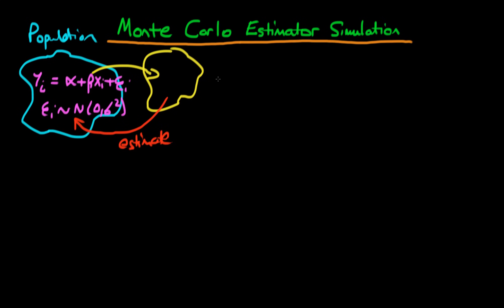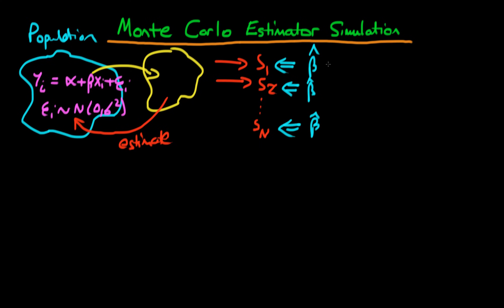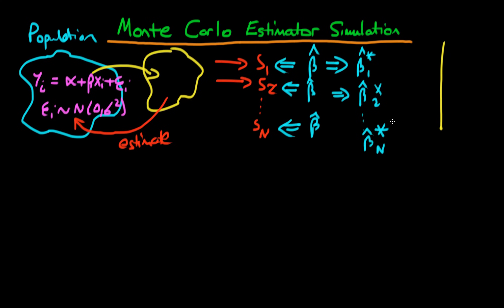Furthermore, if we take different samples from the population — sample S1, sample S2, and so on for a large number of samples up to Sn — and then use our estimator, say our least squares estimator beta hat, on each of those samples, we will get a range of different values of beta hat star, the point estimate of the population parameter beta. We get slightly different values because we are sampling slightly different individuals each time. This is called sampling error, and we have something known as a sampling distribution.